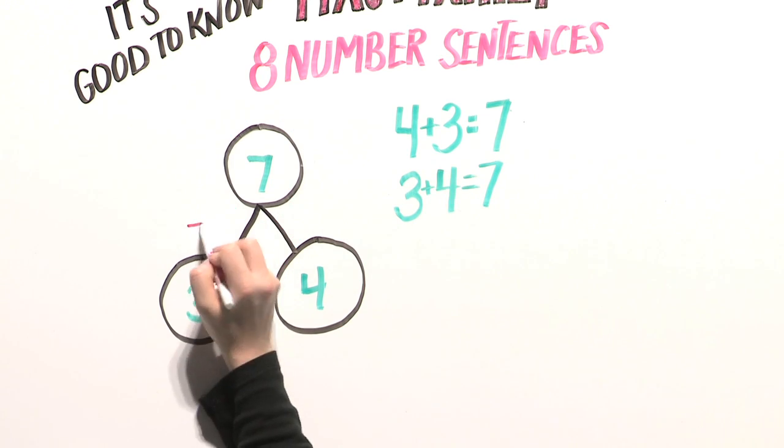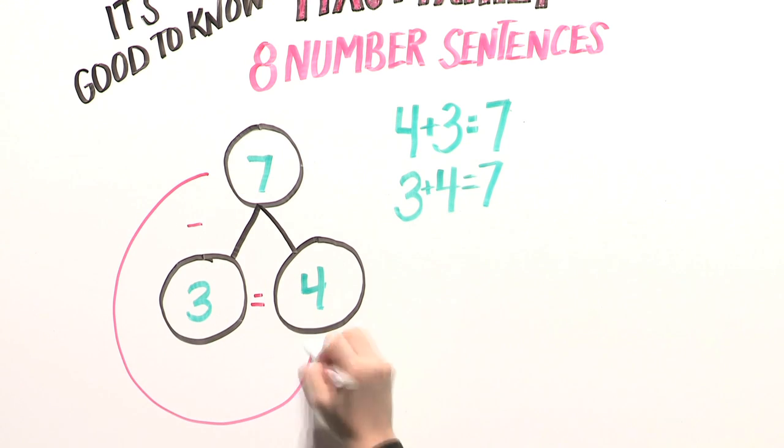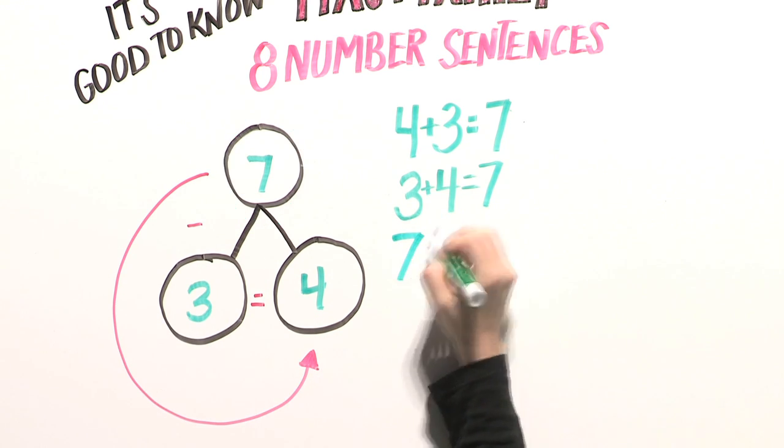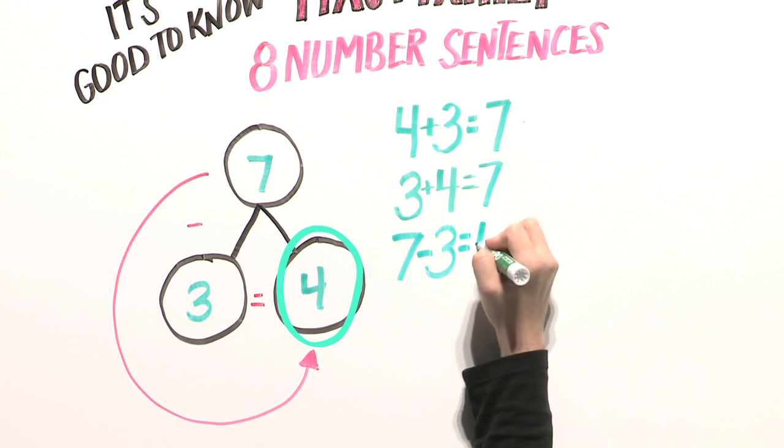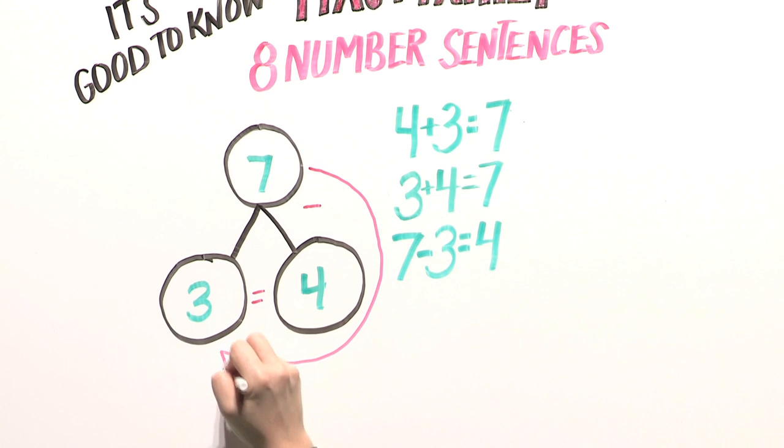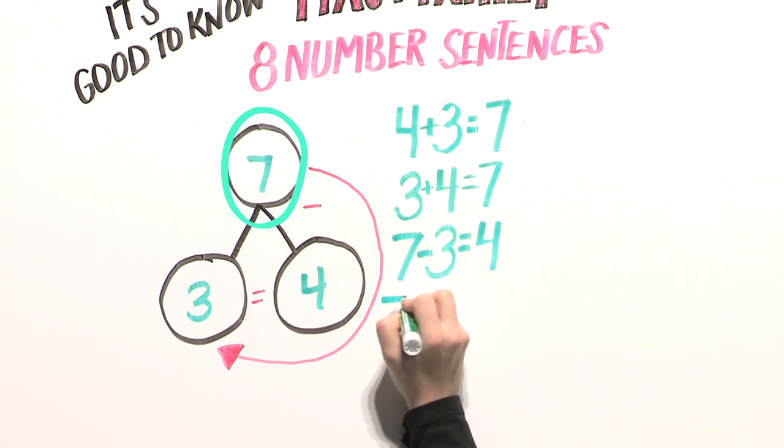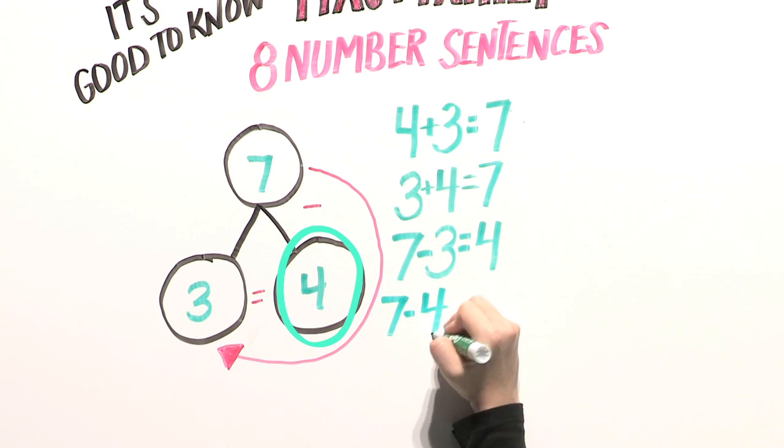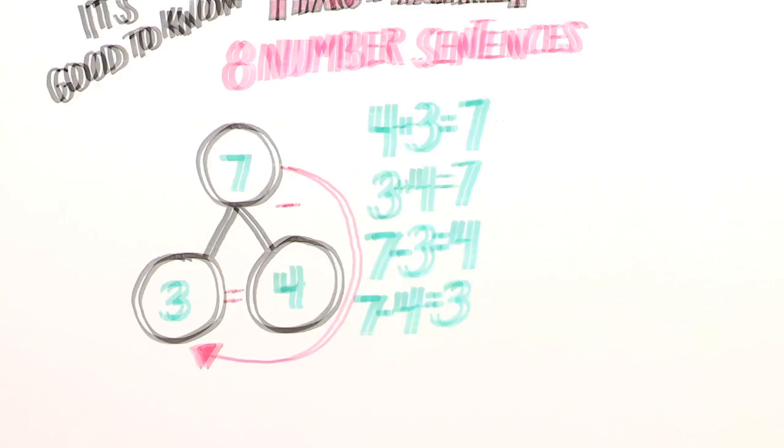When the number bond looks like this, read it this way: 7 minus 3 equals 4. And when the number bond looks like this, read it this way: 7 minus 4 equals 3. But wait,